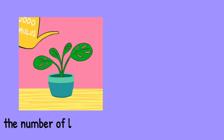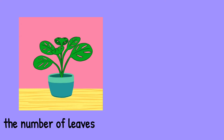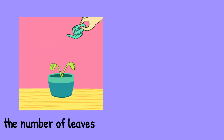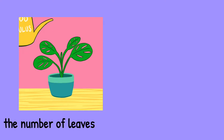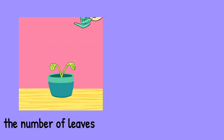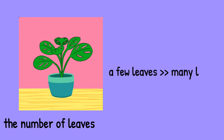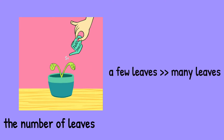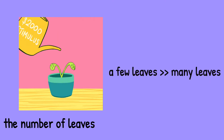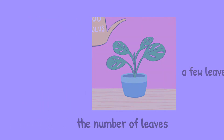Next, from two leaves the plant will increase to many leaves. So the number of leaves will increase — from few leaves, they will change into many leaves.